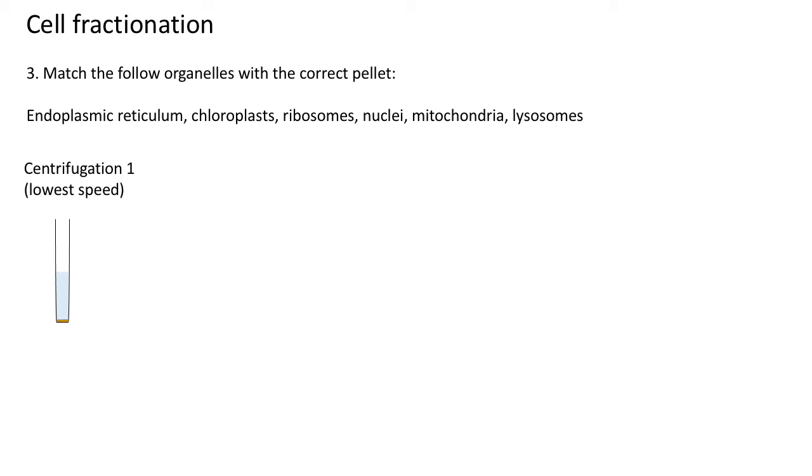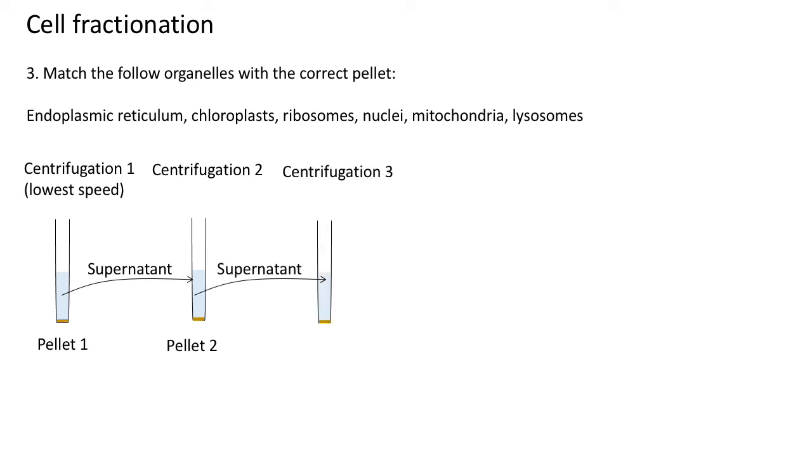We go through a series of centrifugation steps. That first centrifugation will be at low speed, which gives a pellet and supernatant. The pellet is collected. The supernatant is then transferred to a new tube and you centrifuge again. That gives pellet 2. You collect that pellet, take the supernatant, put it in a new tube, and centrifuge again. You keep repeating that.